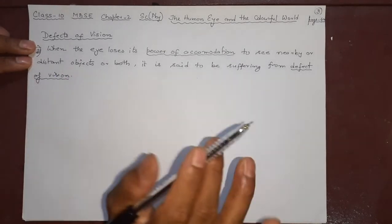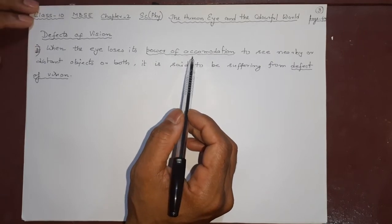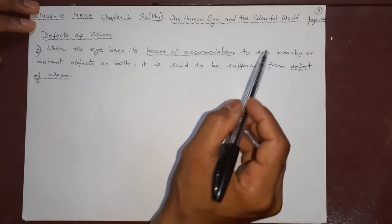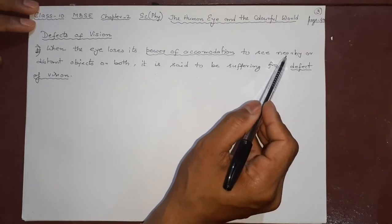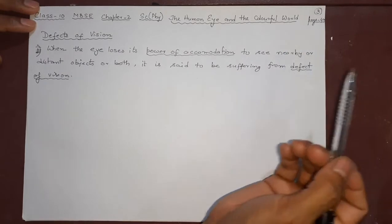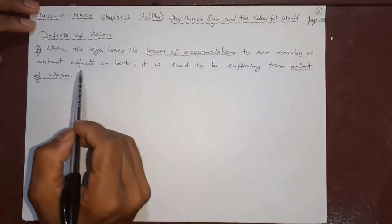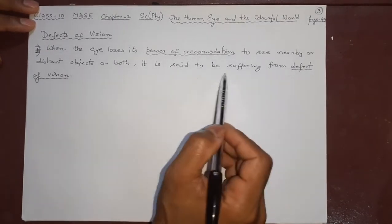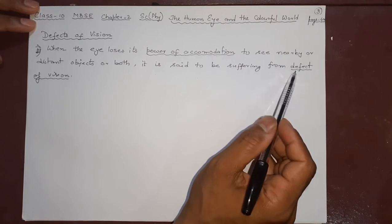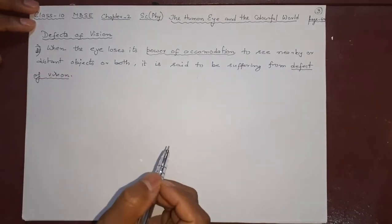If that adjustment is very good, our eye has good power of accommodation. But if it is not very good — when the eye loses it with age or other things — sometimes the eye is able to see near but not very far, and sometimes good at far distance but not near, or sometimes both. So it is said to be suffering from a defect of vision.